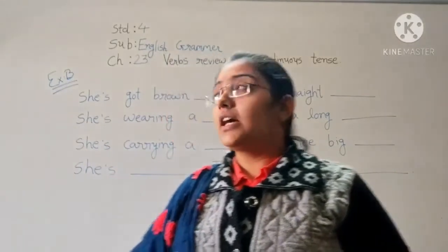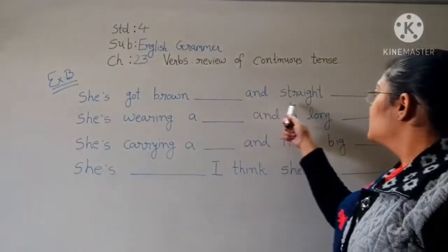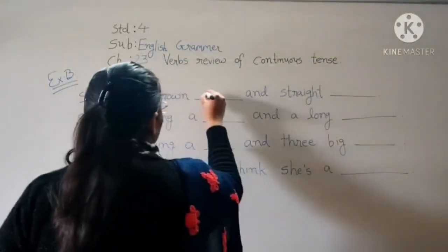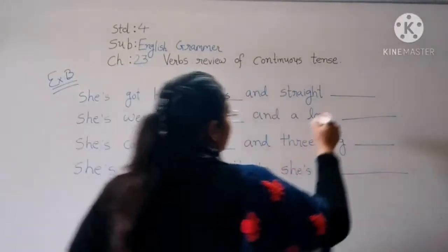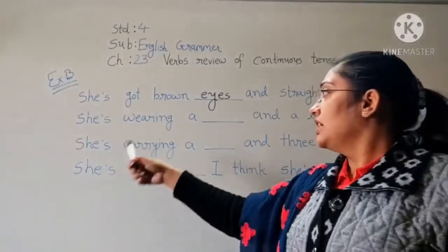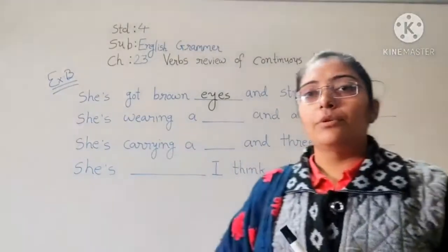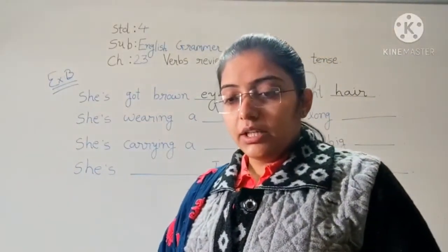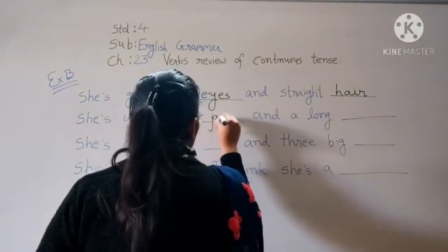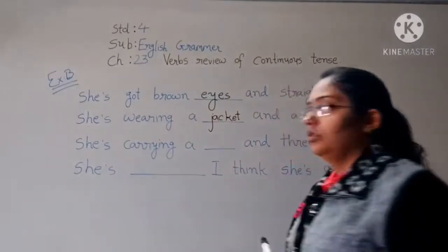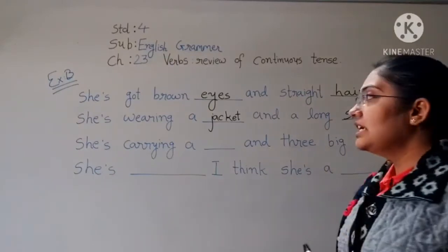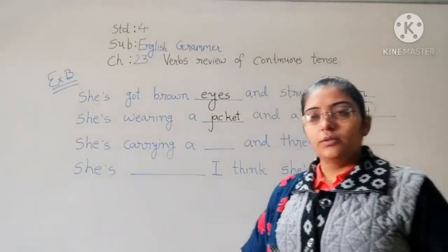Let's start. She has golden-brown, straight hair and round eyes. Straight matlab seedhe — she has straight hair. She is wearing a jacket and a long skirt. Hum picture mein dekh sakte hain — purple colour ka jacket usne pehna hai. She is wearing a jacket and a long skirt.